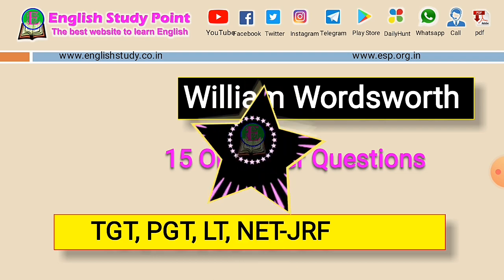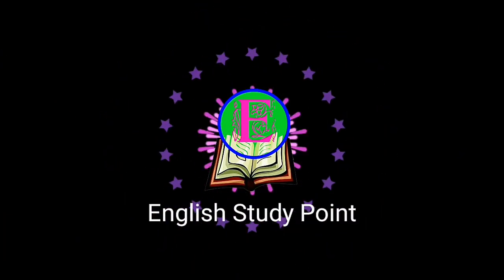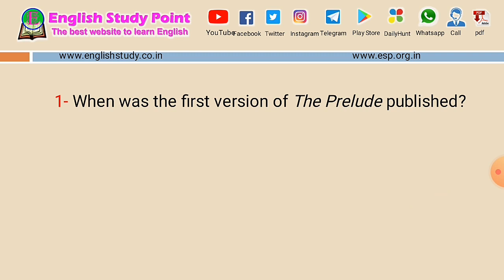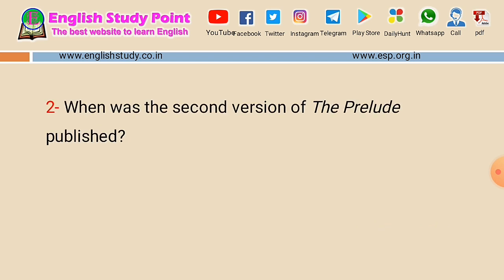Let's start. The first question is: when was the first version of the Prelude published? You have to find out the year when the first version of the Prelude was published. The answer is 1799.